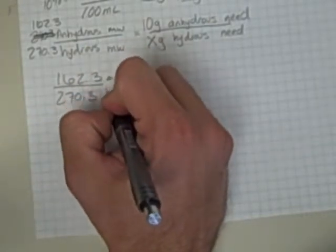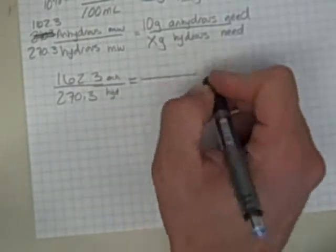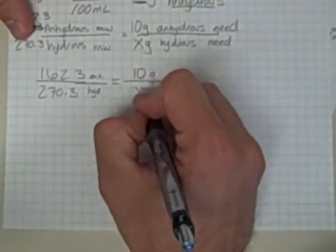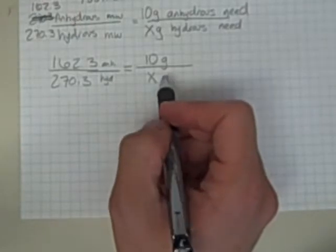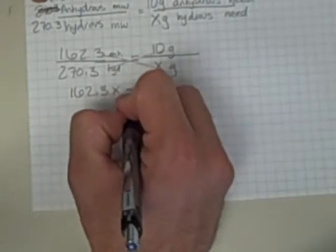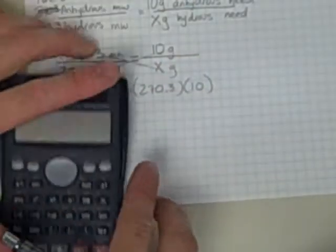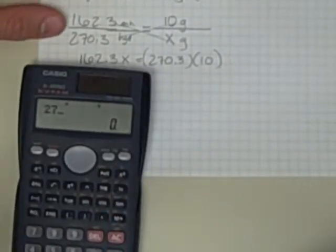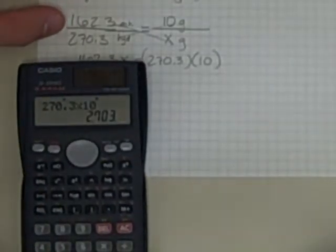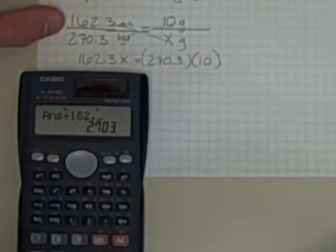So what I end up with here is 162.3 over 270.3. I like to write anhydrous-anhydrous here so I don't get these confused. It doesn't matter which is on top or which is on the bottom as long as it's the same over here. Equals 10 grams—that's what I determined I would need if it were anhydrous—and what I'm trying to convert to is how many grams of the hydrated stuff I would need. So I cross multiply and get 162.3x equals 270.3 times 10. Go ahead and crunch that guy out. So 270.3 times 10 gives me 2703. If I divide it by 162.3 to get my x by itself, I get this value of 16.654 grams.